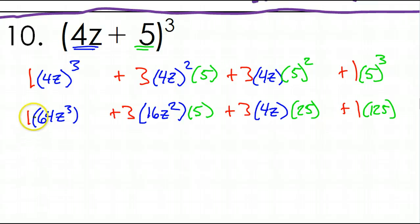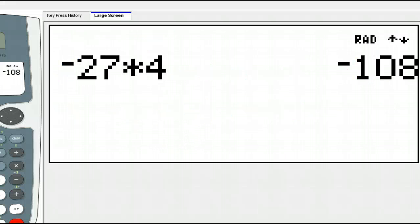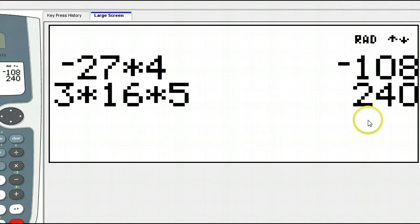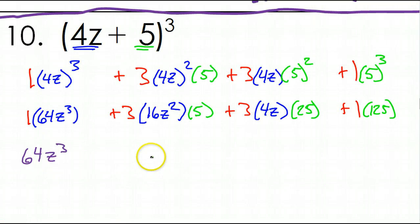So, this 1 is not doing anything. So, this is just 64z to the third power. Now, over here, we have three numbers to multiply. 3 times 16 times 5. So, that is 240. So, that's why we're going to have 240z squared. The z squared is still there.